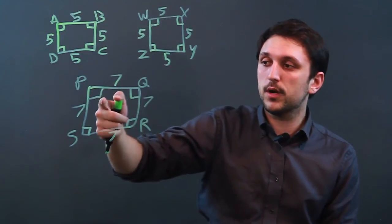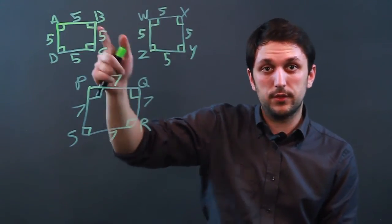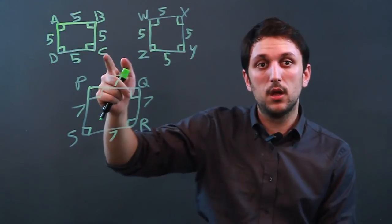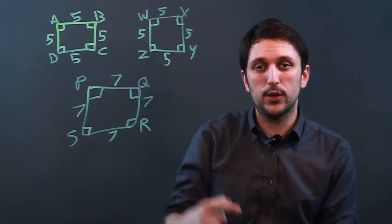If the squares have the same angles, then they're similar, and all squares are similar, but if they have different side lengths, they are not congruent.